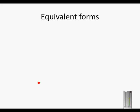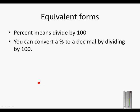Equivalent forms. Because percent means divide by a hundred, we can convert a percentage to a decimal by dividing the percentage by one hundred. So twenty percent is equal to twenty divided by one hundred, which is 0.2.